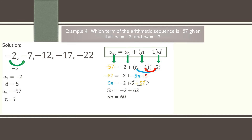To solve for n, divide both sides by 5. So 60 divided by 5 is 12, and 5 divided by 5 is 1. We have n equals 12. In other words, negative 57 is the 12th term of the sequence.